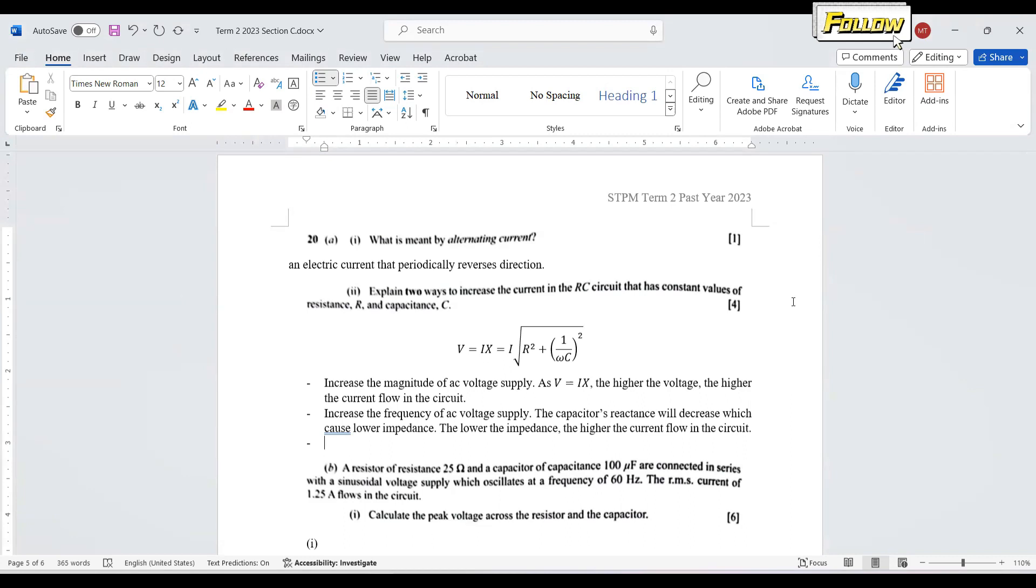V equals Ix, where x is the impedance, which is the square root of R squared plus the reactance squared. The reactance of the capacitance is 1 over omega C. So if we carefully look at the question, there are two variables that we can change.